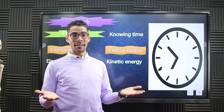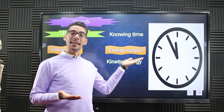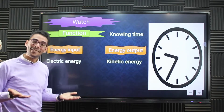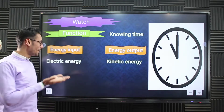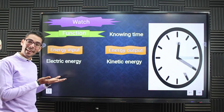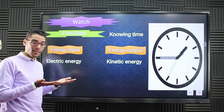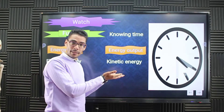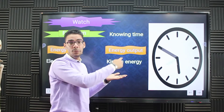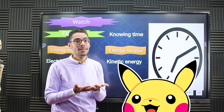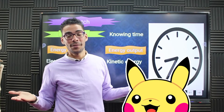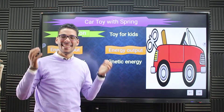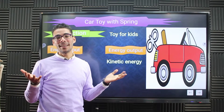The electric watch is a little bit tricky. The input energy in the watch is electric energy, and then it converts the electric energy into movement — kinetic energy. That is how it works.